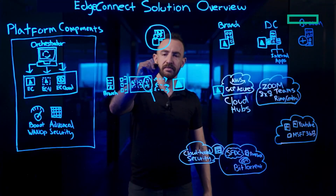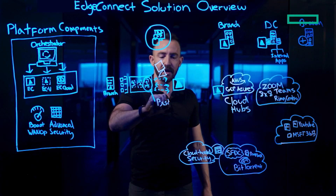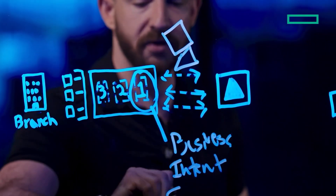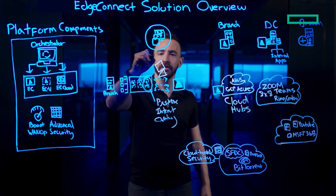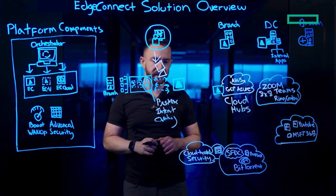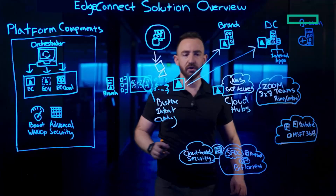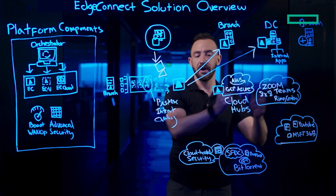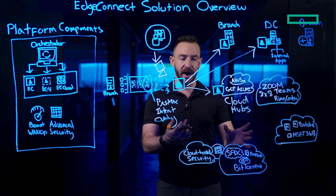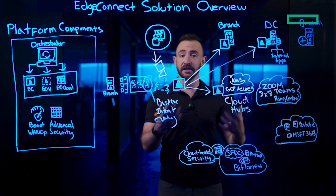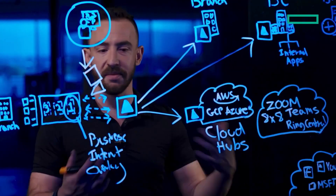That includes orchestration of virtualized WAN overlays, which we call business intent overlays. These are user-defined policies based upon business intent, which are pushed from the Unity Orchestrator out to EdgeConnect appliances. The EdgeConnect appliances are able to build resilient SD-WAN connectivity both to on-premise branch locations, data center hubs, and many enterprises also choose to use one-click automation to extend a protected last mile into popular cloud infrastructure services such as AWS, GCP, and Azure, to act as a front door to sensitive business-critical SaaS applications like Zoom, Teams, RingCentral, 8x8, and many others.